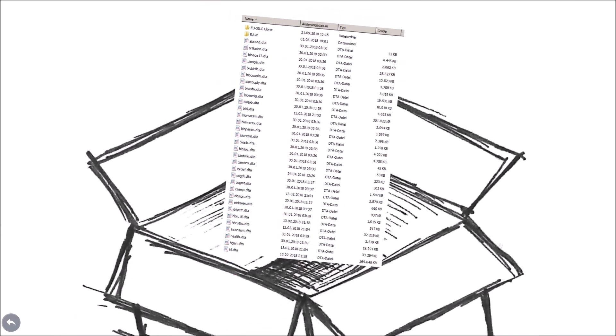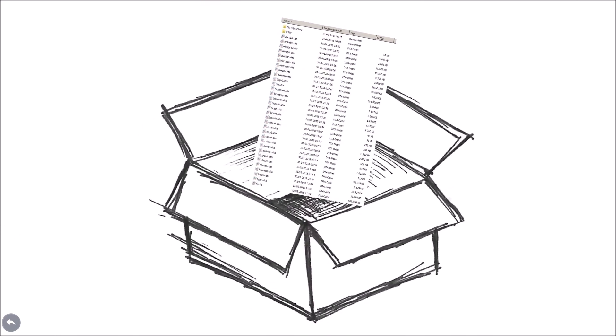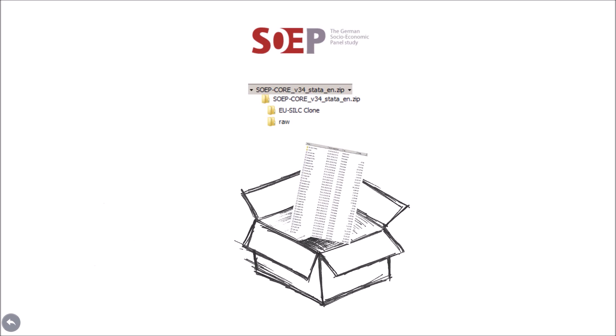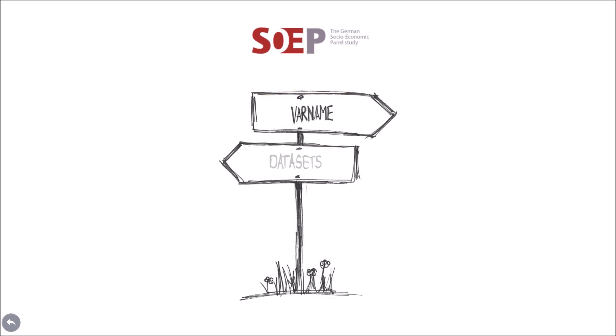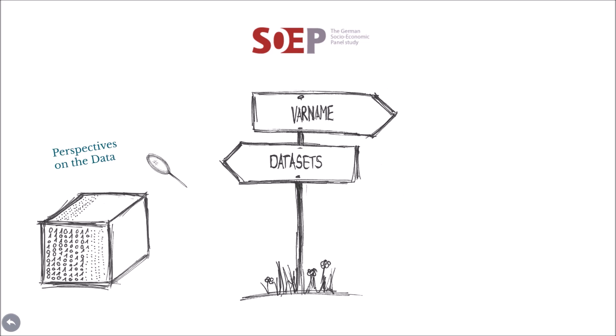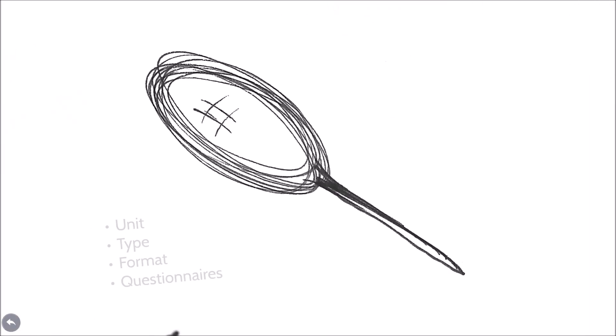In general, we try to give our datasets intuitively understandable names. To help our users navigate their way through all the datasets, the names of datasets are made up of combinations of references to the unit of inquiry, the type and format of the data, and often a reference to the underlying survey instrument.